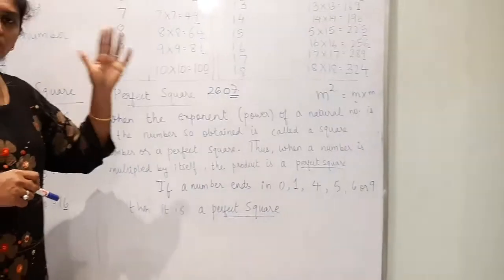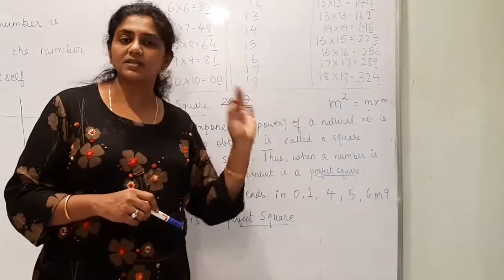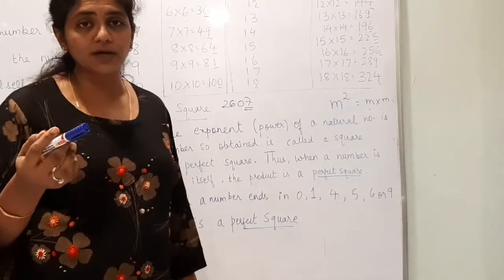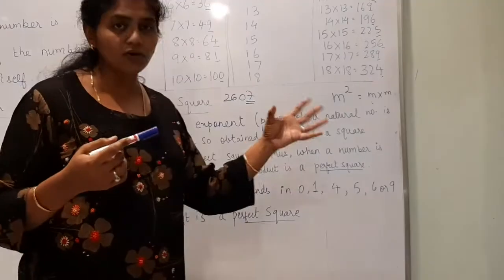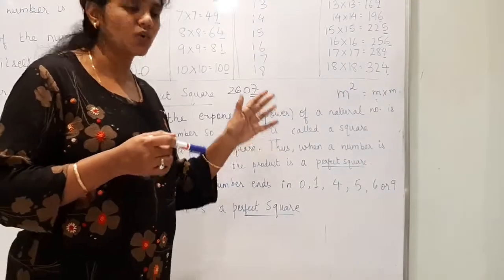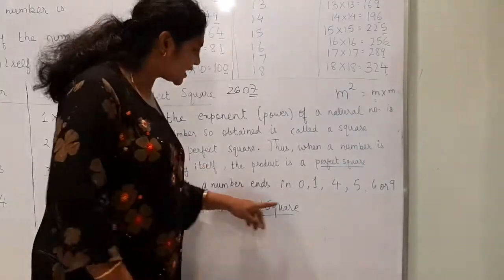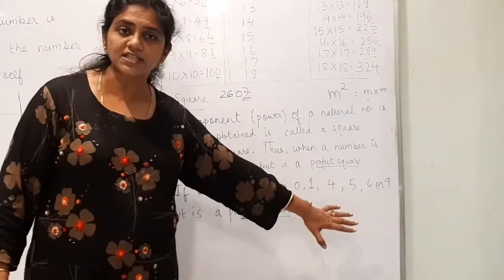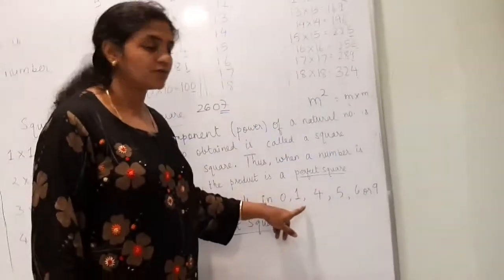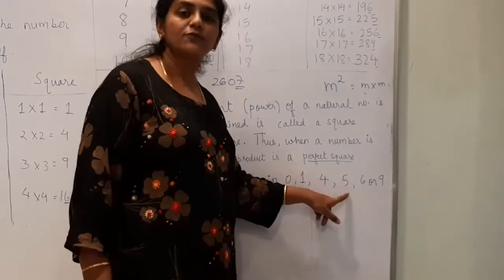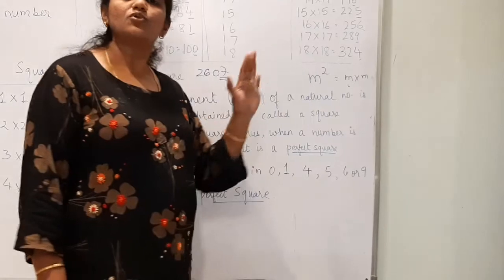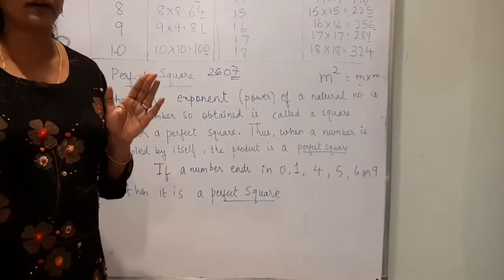The very easy method to check whether a number is a perfect square is to check the last digit, or the unit digit. If the unit digit is 0, 1, 4, 5, 6, or 9, then that number is a perfect square.